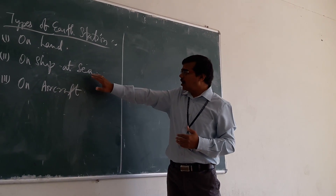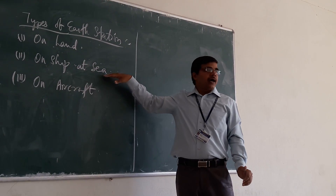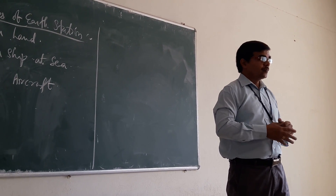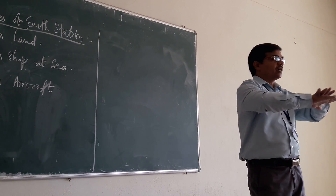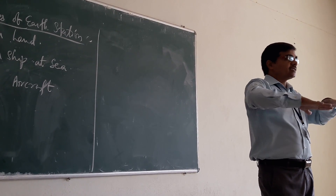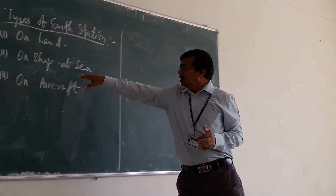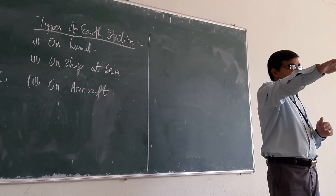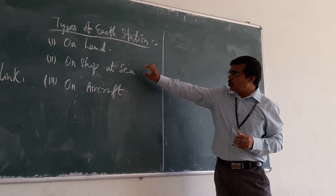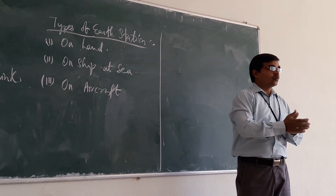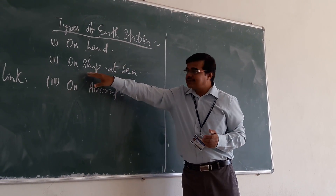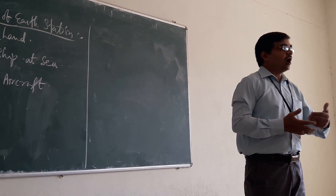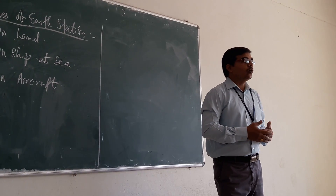If the earth station is on a ship at sea, we can consider it as a plane — we can consider the sea as X and Y coordinates. As the ship is moving from one place to another, the earth station position will also move. In order to know the actual location of the earth station when it is on a ship, we should know the X coordinate and the Y coordinate. So it is two-dimensional — two coordinates are required.